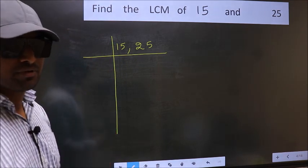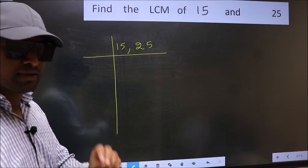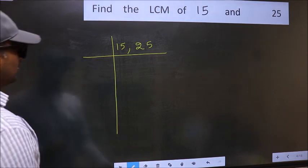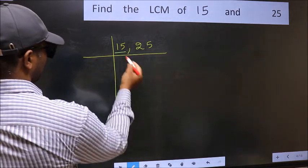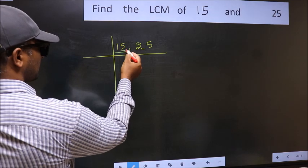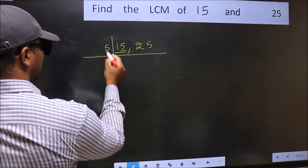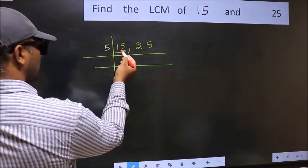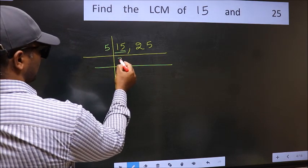Now you should focus on the first number which is 15 here. In this number, last digit 5, so take 5. When do we get 15 in 5 table? 5 times 3 is 15.